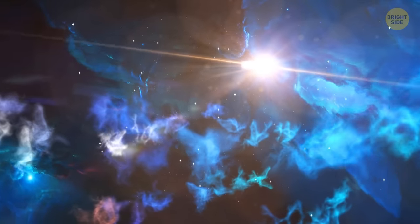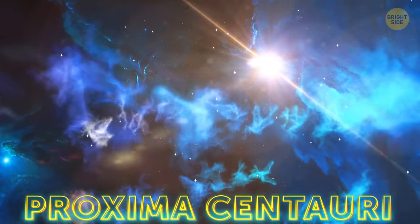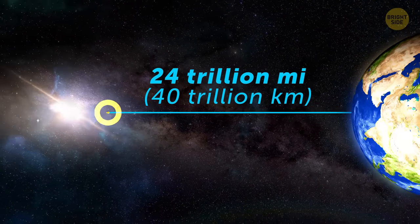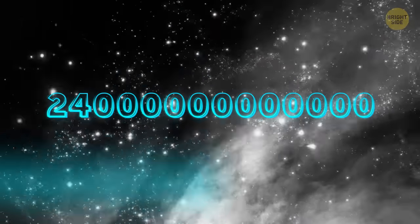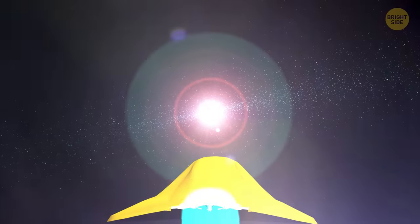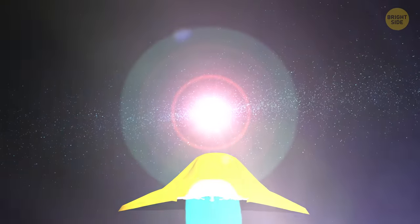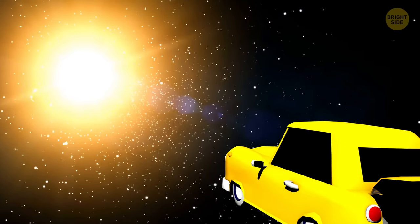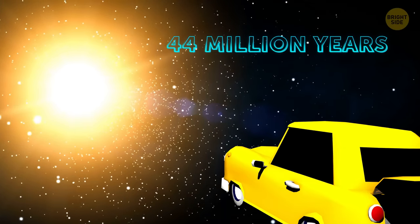You can also visit the closest to Earth star other than the Sun, Proxima Centauri. It's more than 24 trillion miles away from our planet. That's 24 with 12 zeros. No worries, I get confused too. But if you decide to set off on such a journey, be ready to spend 4 years to get there. A road trip to Proxima Centauri would take 44 million years.